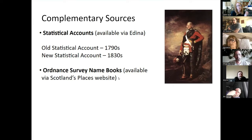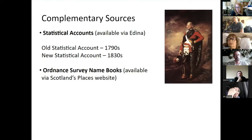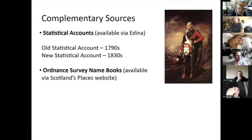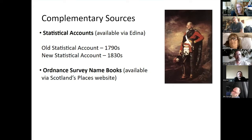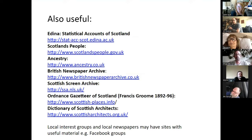Another resource worth looking at is the Ordnance Survey Name Books. When the first edition maps were produced in the 1840s, alongside the surveyors they also employed a team of researchers who would ask local landowners and ministers for information on each place being surveyed. This produced a really detailed set of information for every map sheet - alternative spellings and names for places, a bit of history, acreage, and so on.